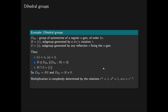This means that we can write the group D2N as the following group presentation. D2N is generated by the two elements r and s, meaning every element of D2N can be expressed as a product of r, s, and their inverses. This is subject to the relations r^N = 1, s^2 = 1, and srs = r-inverse.